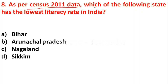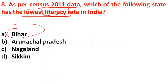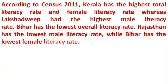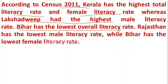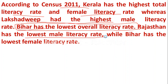Question 8: As per Census 2011 data, which of the following states has the lowest literacy rate in India? Option A - Bihar; option B - Arunachal Pradesh; option C - Nagaland; option D - Sikkim. The answer is Bihar. Kerala has the highest total literacy rate and female literacy rate, while Lakshadweep had the highest male literacy rate. Bihar has the lowest overall literacy rate and also the lowest female literacy rate, while Rajasthan has the lowest male literacy rate.